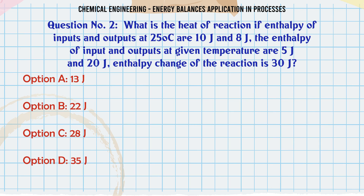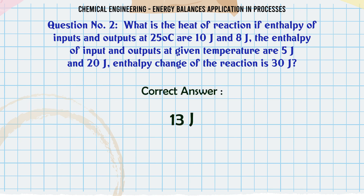What is the heat of reaction if enthalpy of inputs and outputs at 25°C are 10 J and 8 J? The enthalpy of inputs and outputs at given temperature are 5 J and 20 J. Enthalpy change of the reaction is 30 J. A: 13 J. B: 22 J. C: 28 J. D: 35 J. The correct answer is 13 J.